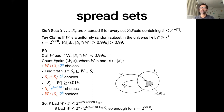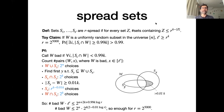This clever counting argument is the heart of the matter. It uses the spread condition to guarantee that a random set will contain an element from the family. This argument is bound to have many applications just because sunflowers already have so many applications — both by using the sunflower lemma as a black box, and by directly applying these ideas to other combinatorial problems.